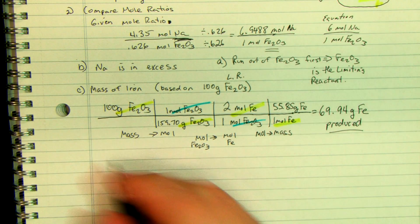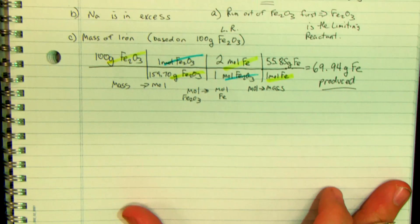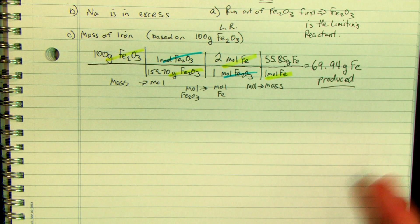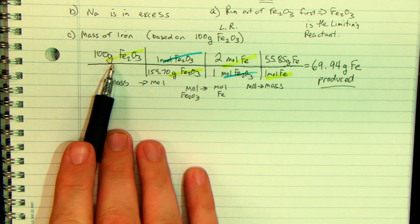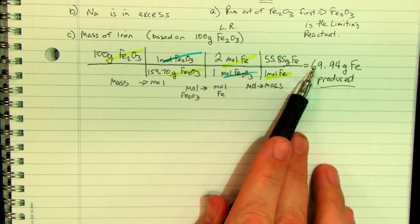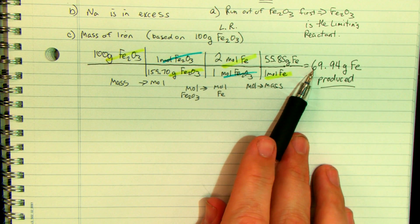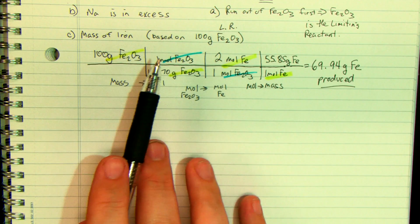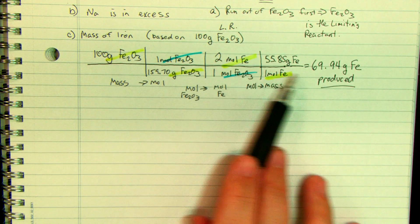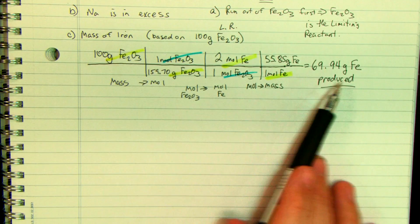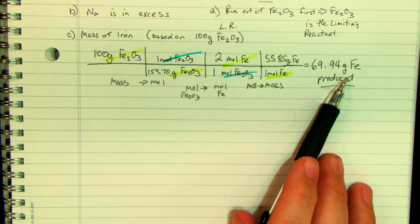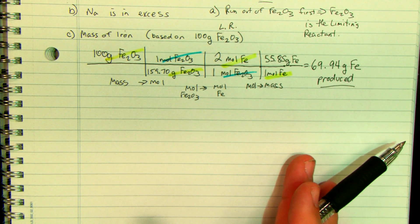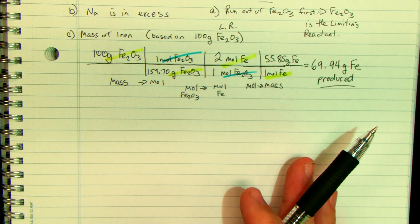Does it make sense how we used unit analysis? I went grams to moles, moles to moles, moles to grams. Once you get the hang of it, it's an extremely simple way of getting from 100 grams to 69.94 grams, because it ends up just being multiplying and dividing. Submit to the process — it will make your life so much easier.